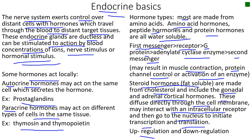Let's talk about up regulation and down regulation. If levels of a particular hormone rise in the blood, the target cells might produce more receptors to receive that signal — that's called up regulation.